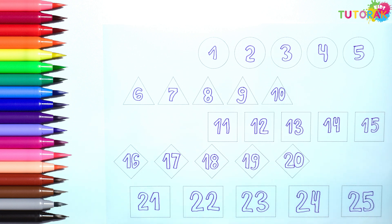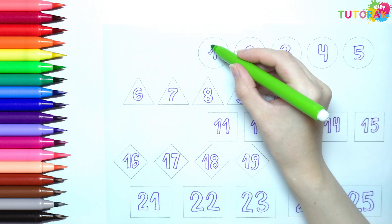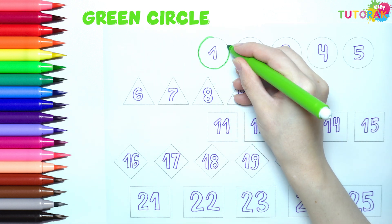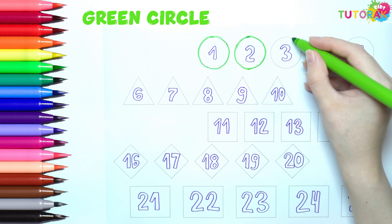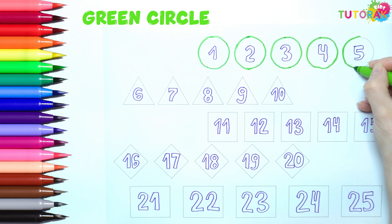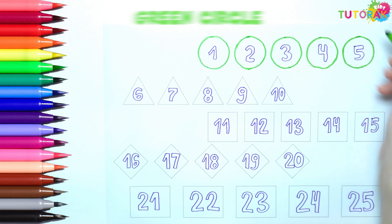The first shape is a circle. We have 1, 2, 3, 4, 5. 5 green circles.